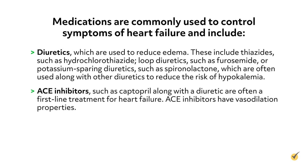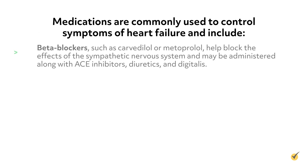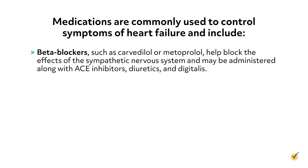ACE inhibitors, such as captopril, along with a diuretic, are often a first-line treatment for heart failure. ACE inhibitors have vasodilation properties. Angiotensin-2 receptor blockers, or ARBs, may be added to ACE inhibitors or used in place of them if a person cannot tolerate the ACE inhibitor. Beta blockers, such as carvedilol or metoprolol, help block the effects of the sympathetic nervous system and may be administered along with ACE inhibitors, diuretics, and digitalis.